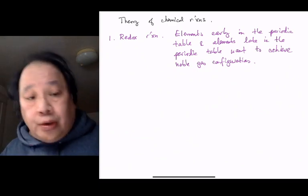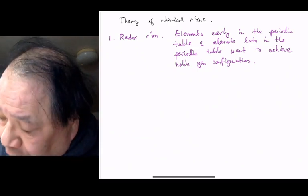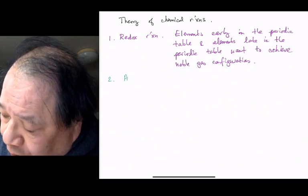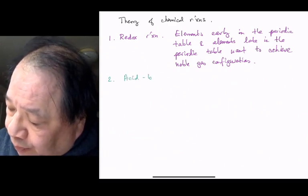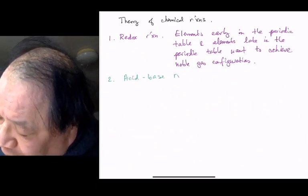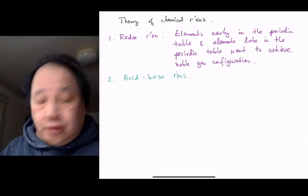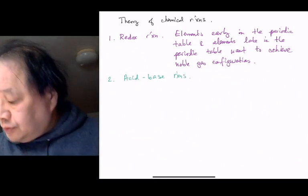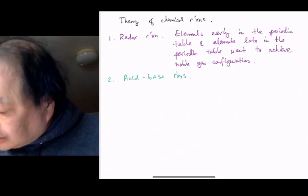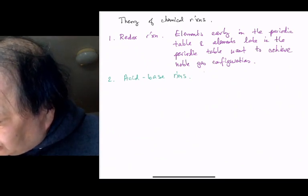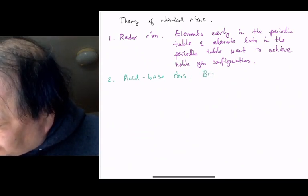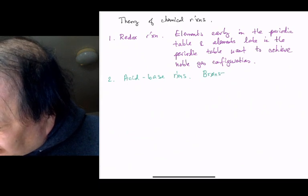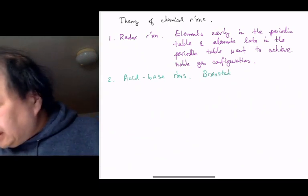We can also understand the basis of acid-base reactions by studying what happens to the electrons. And in the acid-base theory that we're going to learn, the Bronsted, with the O having a line through it, the Bronsted-Lowry theory.